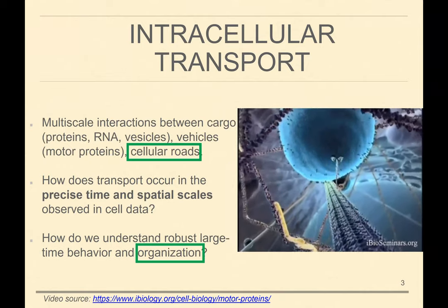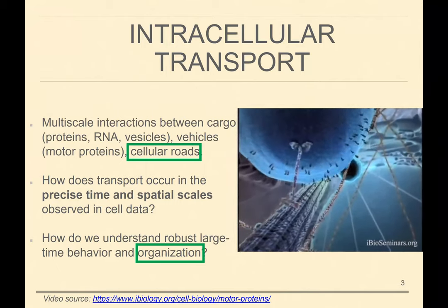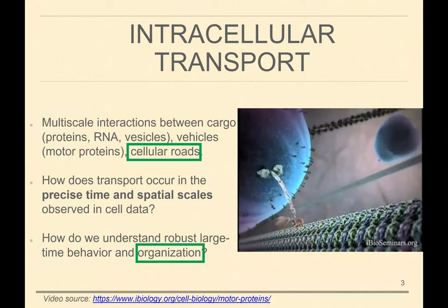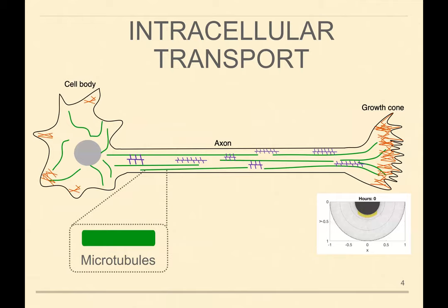I'll focus a bit today on the cellular roads and how they get organized. There are a few main classes of filaments inside the cell, all existing at different scales and leading to interesting mathematical questions. One example is a neuron — you can see its cell body, axon, and growth cone. Inside, one of the first classes of filaments are microtubules — these green lines — which are the largest in diameter and longest. Proteins that have to travel from the cell body to the growth cone are typically transported along microtubules.